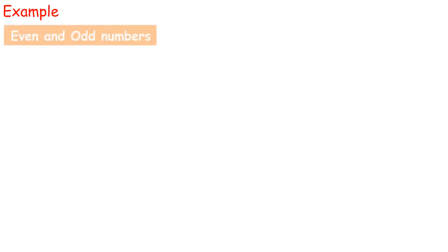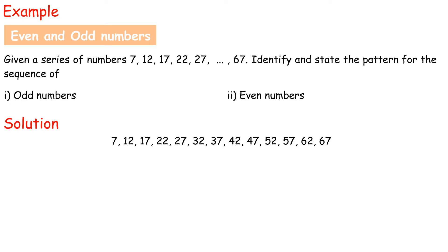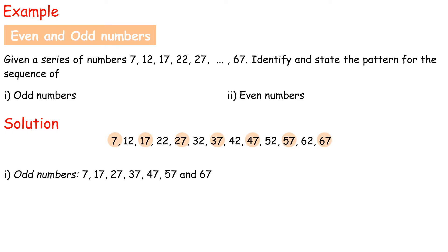Example: Even and odd numbers. Given a series of numbers 7, 12, 17, 22, 27, 67, identify and state the pattern for the sequence of: 1. odd numbers, 2. even numbers. Solution: Write down all the numbers in the sequence: 7, 12, 17, 22, 27, 32, 37, 42, 47, 52, 57, 62, 67. The odd numbers are 7, 17, 27, 37, 47, 57, and 67.